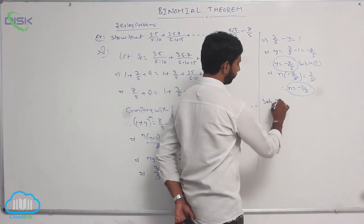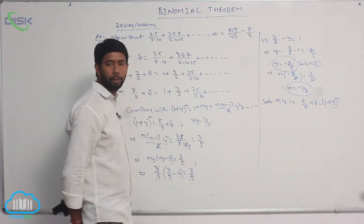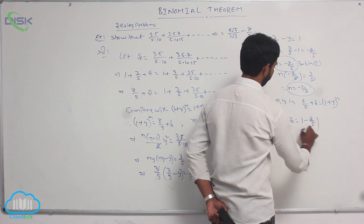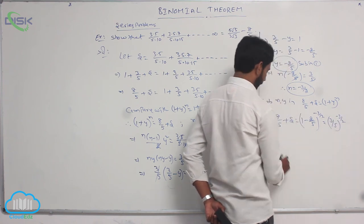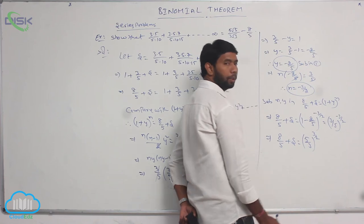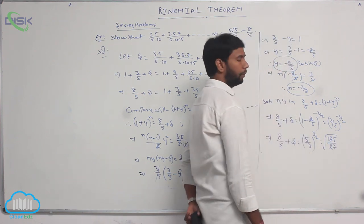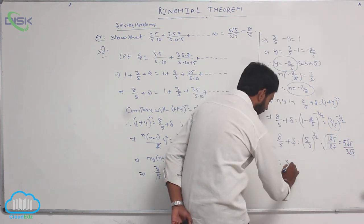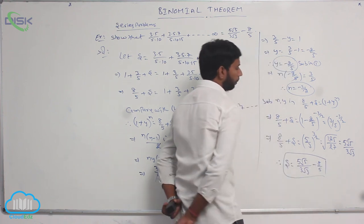Substituting n and y into 8/5 + S = (1 + y)^n: 8/5 + S = (1 - 2/5)^(-3/2) = (3/5)^(-3/2) = (5/3)^(3/2) = √(125/27) = 5√5/(3√3). Therefore S = 5√5/(3√3) - 8/5.